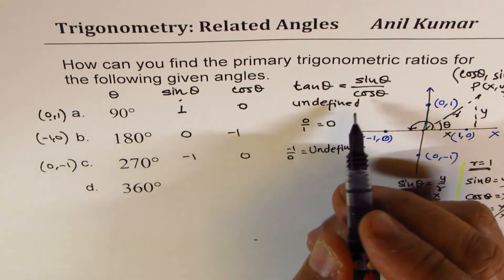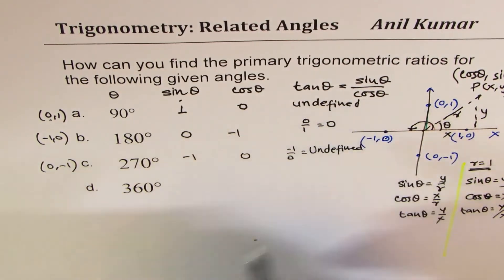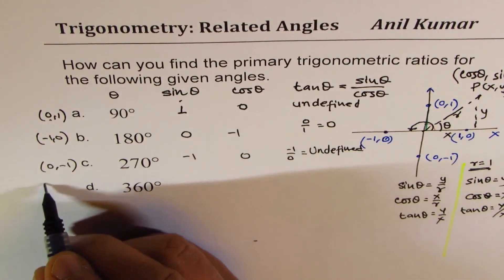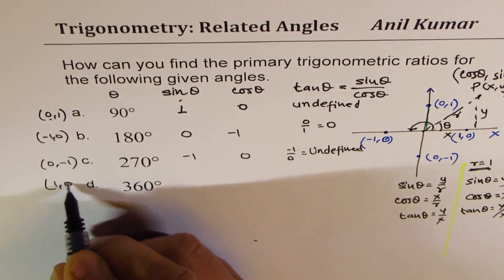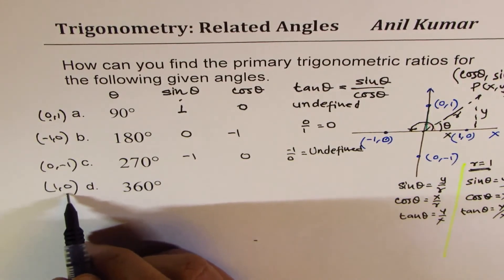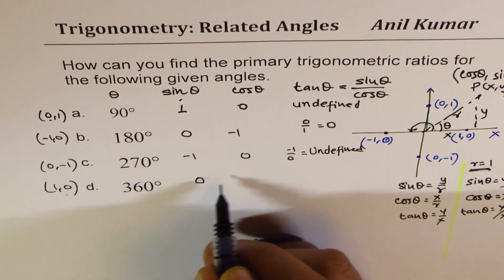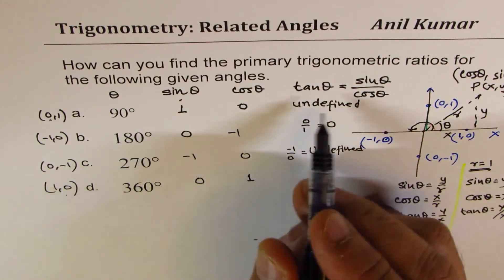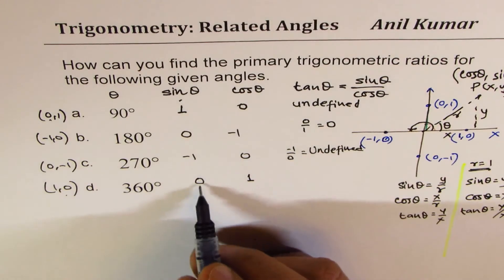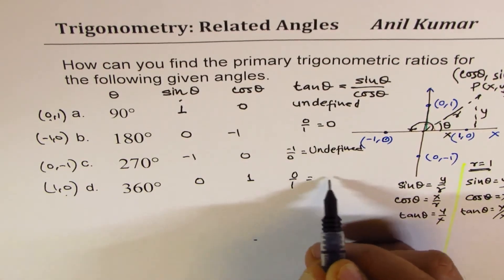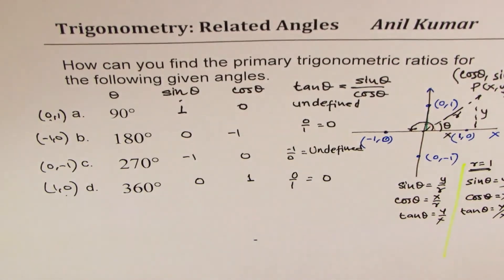For 360 degrees, the point is (1, 0). That means sine theta is 0, cos theta is 1, and tan theta will be 0 over 1, which equals 0.